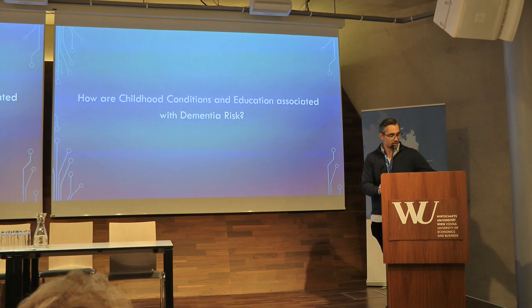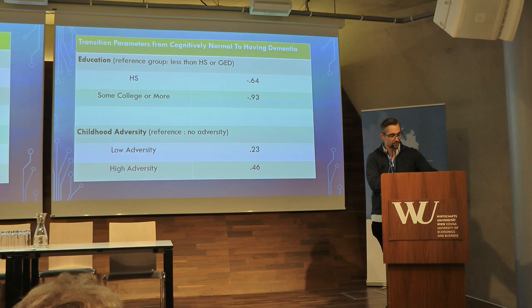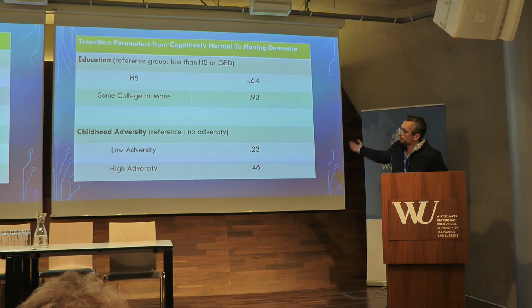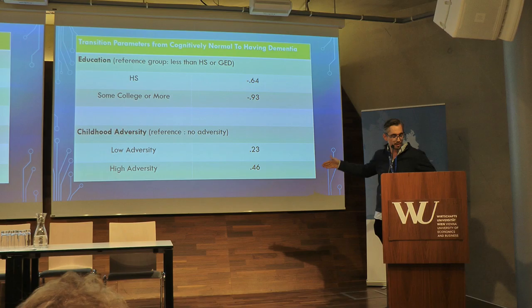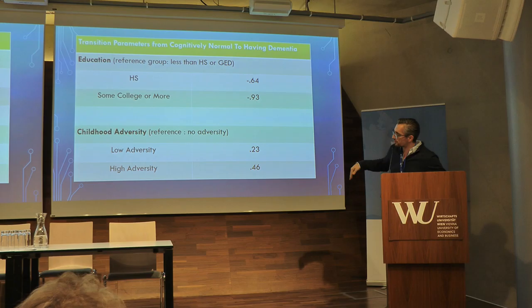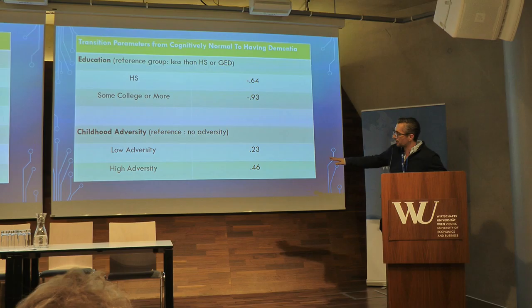First I want to present the parameter estimates for transitioning between childhood conditions and education to dementia. Education was grouped into less than high school, high school, and college. Consistent with all other findings, the more education you have, the less likely you are to transition from cognitively normal — or without dementia — to having dementia. With child adversity, you also see a greater risk of transitioning: low adversity compared to no adversity is 0.23, and high adversity has an even greater effect.